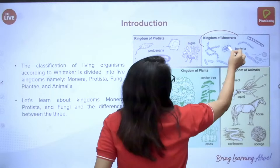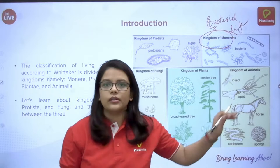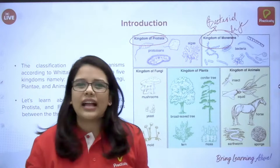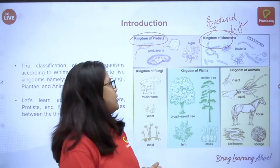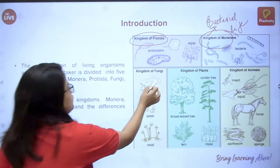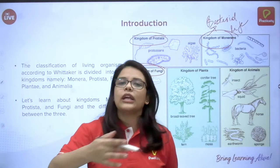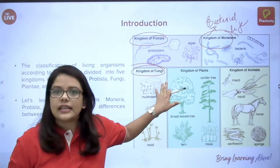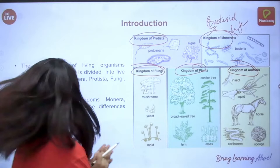So let's start with Monera — basically bacterial life. All different kinds of bacteria come under Monera. Then Protista — basically protozoa, diatoms, and algae. Although algae is still sometimes considered for the plant kingdom, we normally place protozoa and diatoms in Protista. Then comes Fungi — totally different from protozoa in structure, reproduction, and nutrition. Plants and animals we'll discuss in the next class, as they are a huge topic.